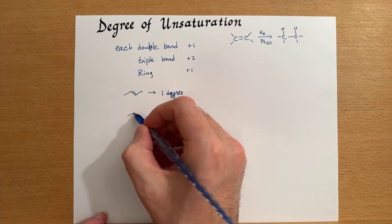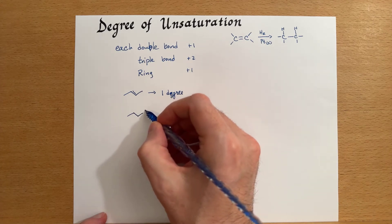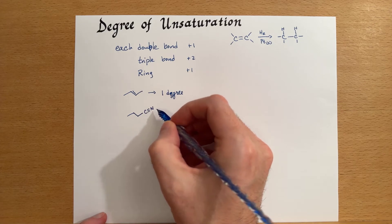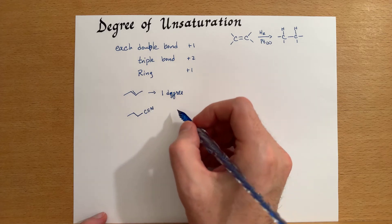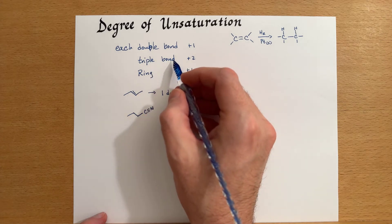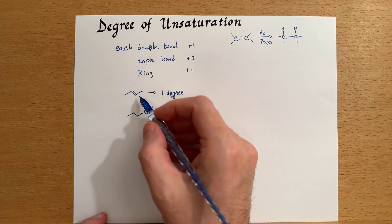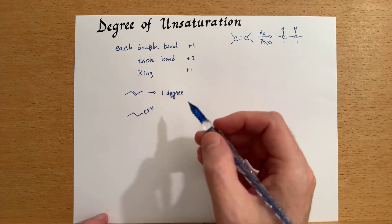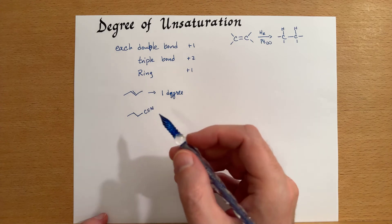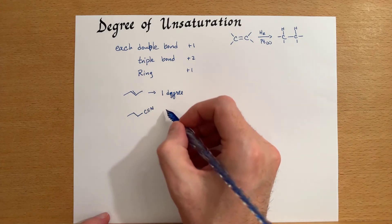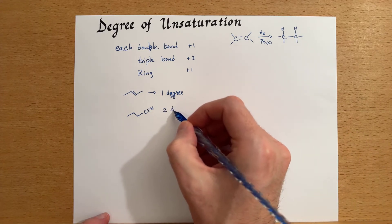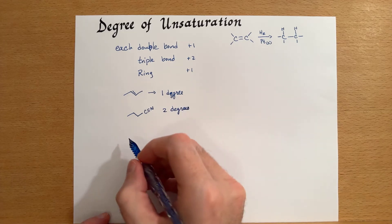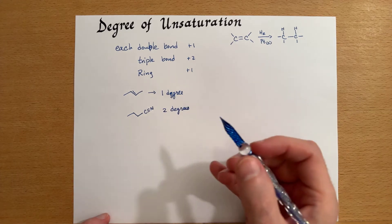We can look at a nitrile, which has a carbon triple bond to a nitrogen. And since it contains a triple bond, even if it's not to another carbon, it could be to other atoms called heteroatoms, this is two degrees of unsaturation.